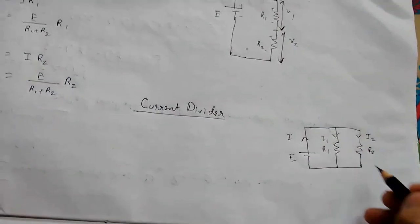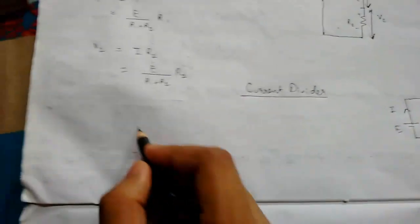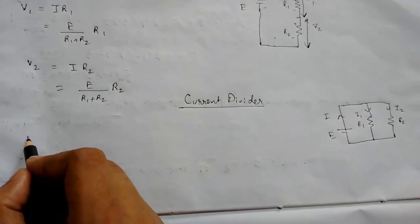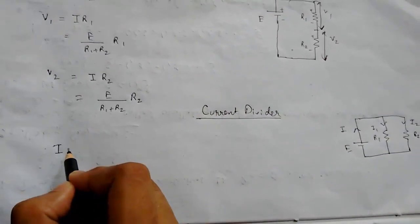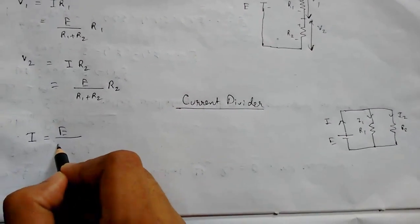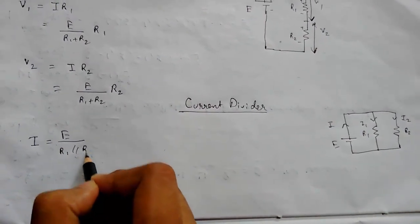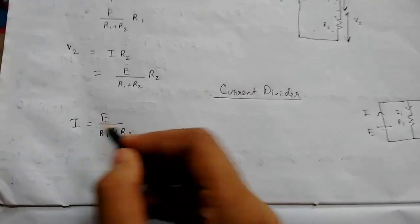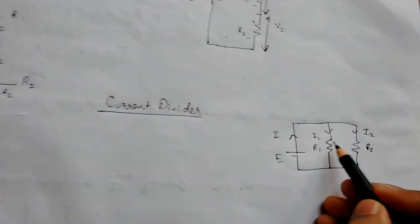Suppose the total current is I, this will be E, I1, I2. So this is our basic diagram. To calculate, first we need to calculate the total current, that is total voltage upon equivalent resistance, that is R1 parallel R2.